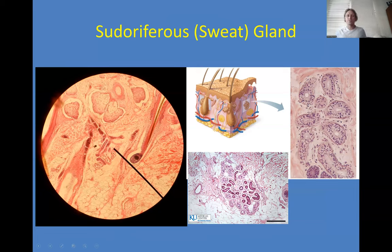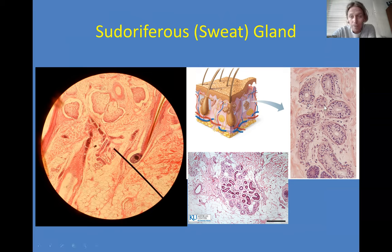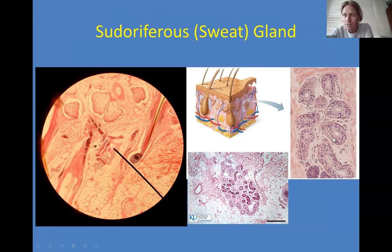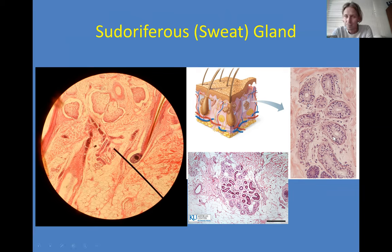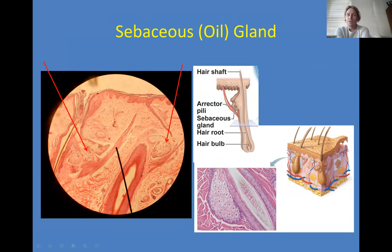Please use the proper anatomical term — pseudoriferous, not sweat glands. Try to identify the type of cells. If you look closely, this is actually simple cuboidal epithelium. Here's the lumen of the tube and the basement membrane surrounding it. It's a little hard to see because getting a clean cut of this tissue is difficult, but this is simple cuboidal epithelium.